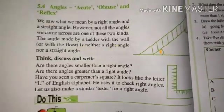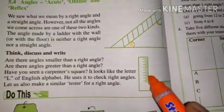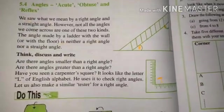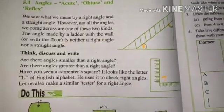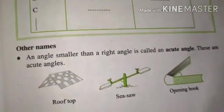Same as L par, humara jo angle bante hain L par, ye dekhe do scale par, ye humara 90 degree hota hai, hai na. Waise hi, other types ke angles bante hain, hamare. Ab hum sabse pehle baat karte hain, bachon, acute angle ki.